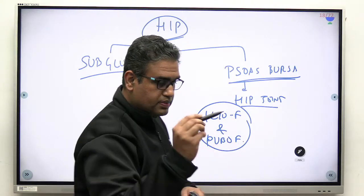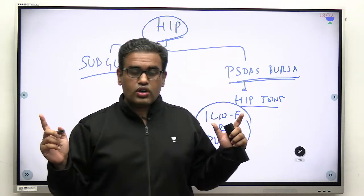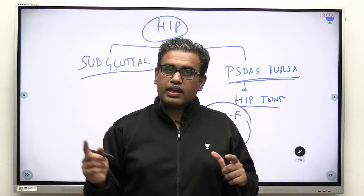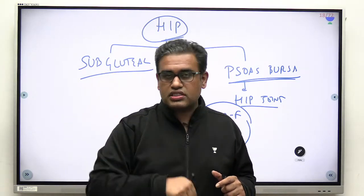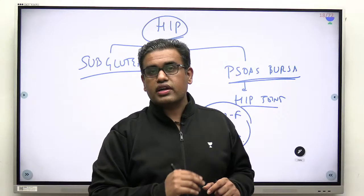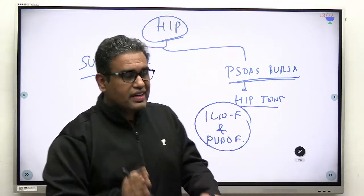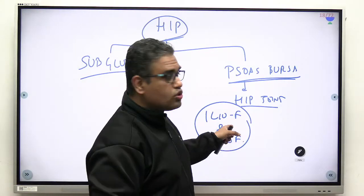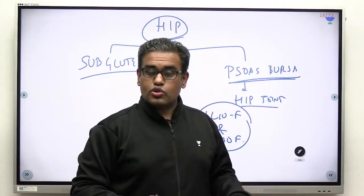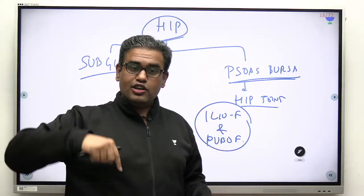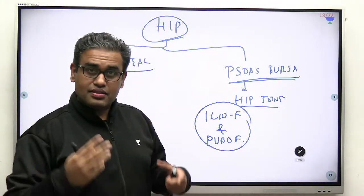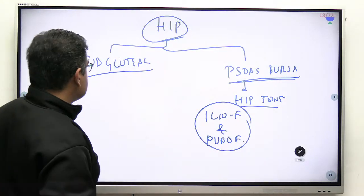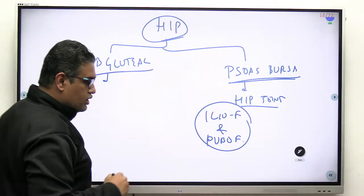Clinically, the psoas bursa is important because cold abscess from Pott's spine may percolate through the psoas fascia and travel down around the lesser trochanter. If the psoas bursa has a large direct communication with the hip joint, this may lead to hip joint arthritis. So theoretically, cold abscess from Pott's spine may lead to hip joint arthritis.